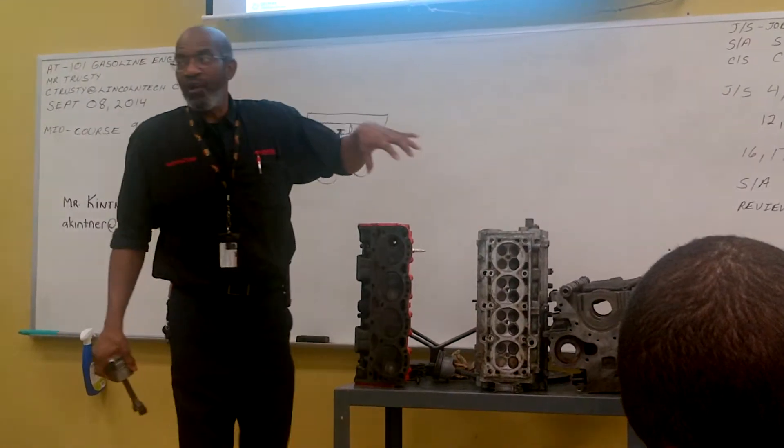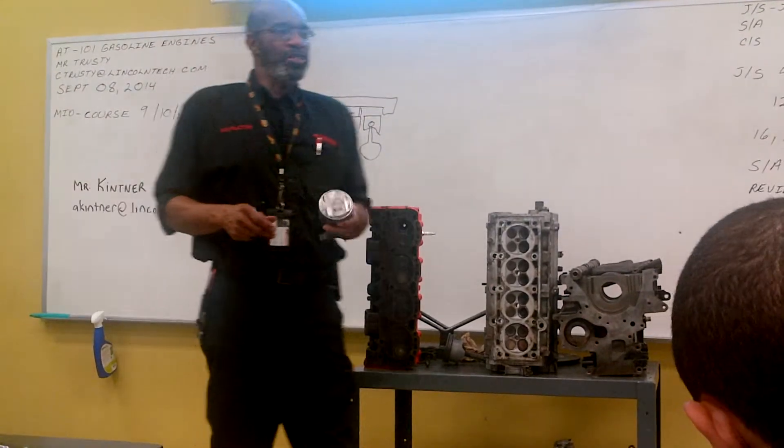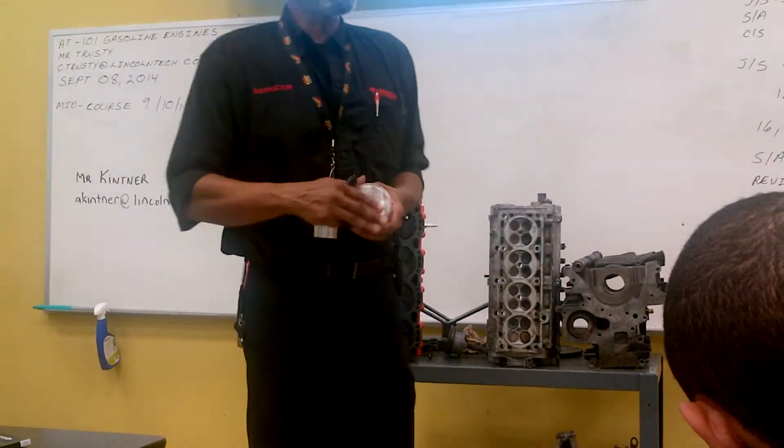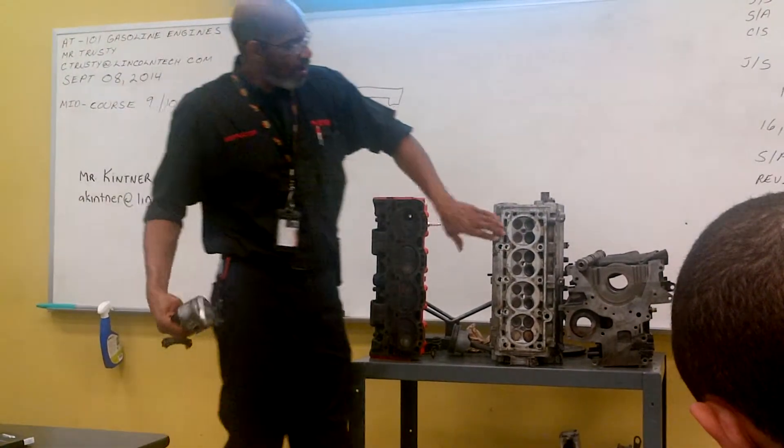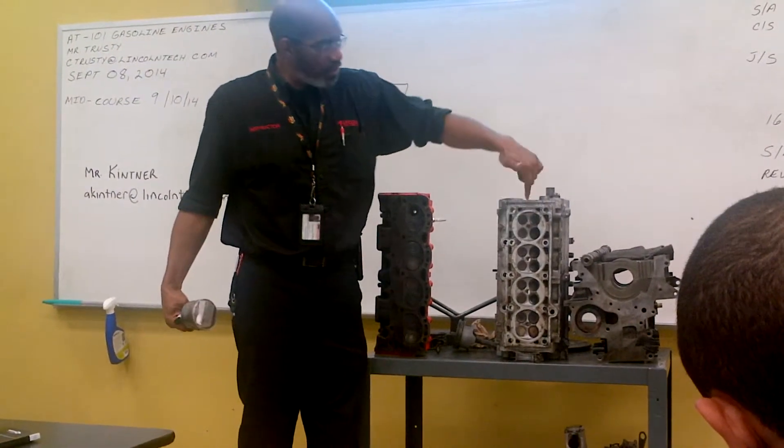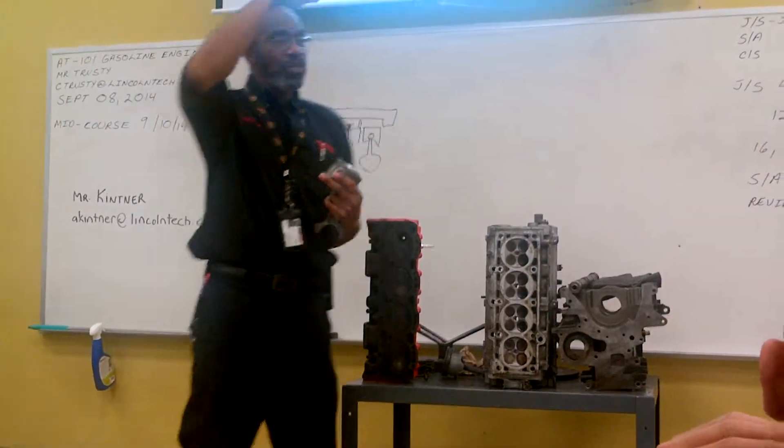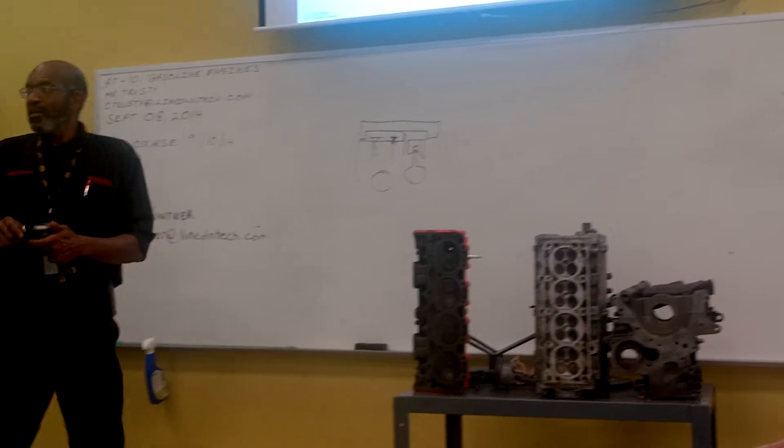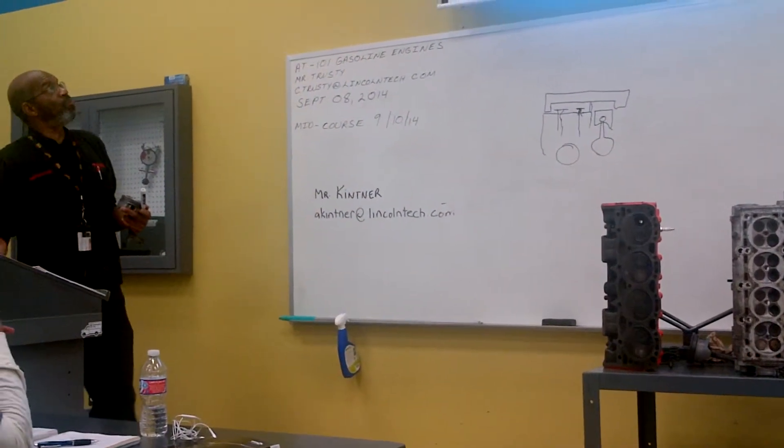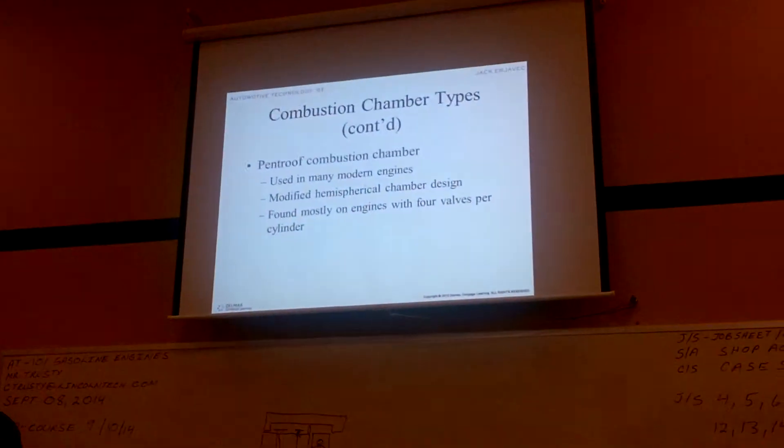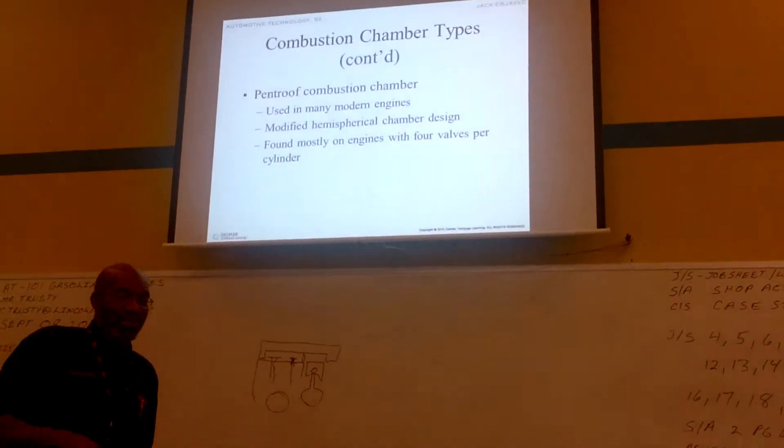What we have now is what we refer to as a pent roof. The piston itself makes up most of the combustion chamber or the whole lower part of the chamber. The valves are opposite each other. The spark plug is in the center. But the top of the chamber is actually flat. And the new Hemi is built in that manner. It's built on a pent roof design. It works pretty good.